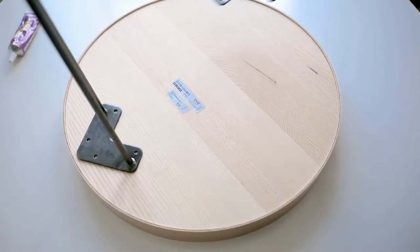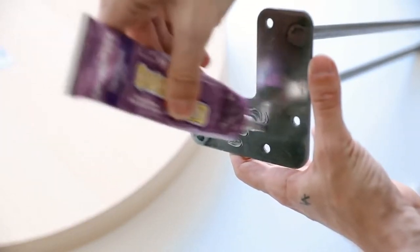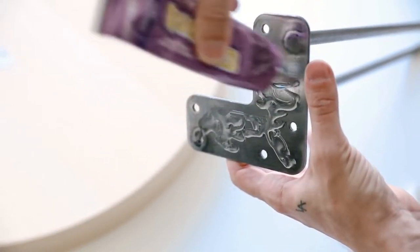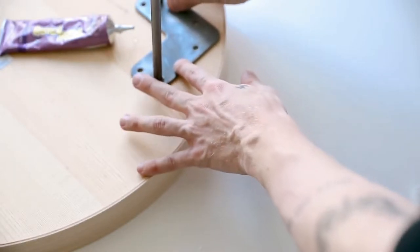All I started off by doing was flipping over my tray and I'm going to be gluing down these hairpin legs in a kind of triangular shape. What I suggest doing is adding glue to the bottom side because essentially these are supposed to be screwed onto your item but the tray is not that thick so I just decided to glue it down.